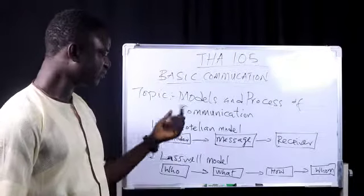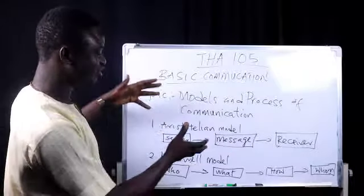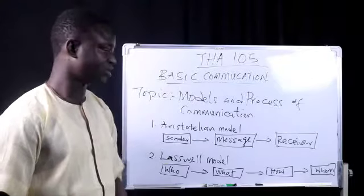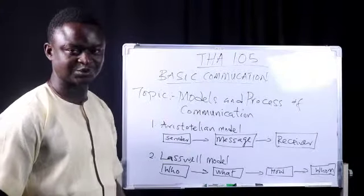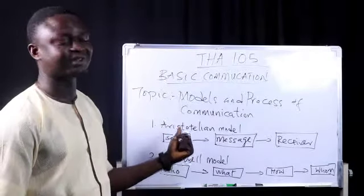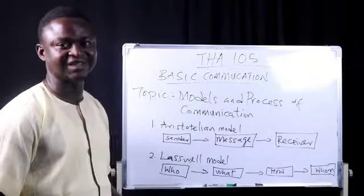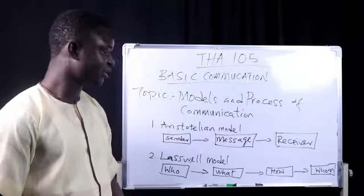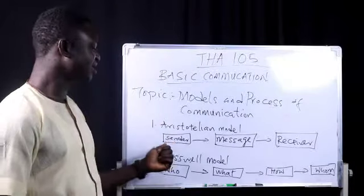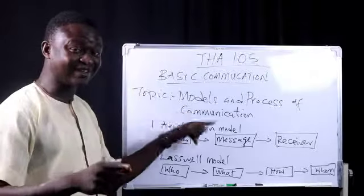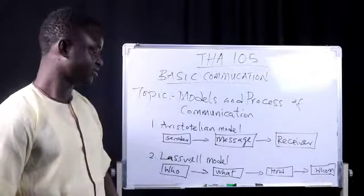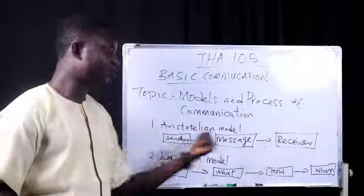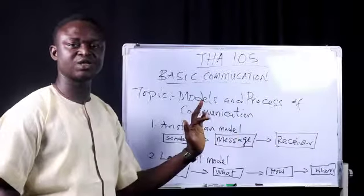We have proven models that communication experts have developed. We look specifically at the Aristotelian model of communication — from the name Aristotle, developed by the great philosopher Aristotle the Great, who existed hundreds of years before Christ. In his development of a communication model, communication is seen as the process of sending a message to a receiver. It falls under the linear model spectrum. He believes there is a sender who sends a message to a receiver, and once the message gets to the receiver, communication has been completed — the communication cycle is over.